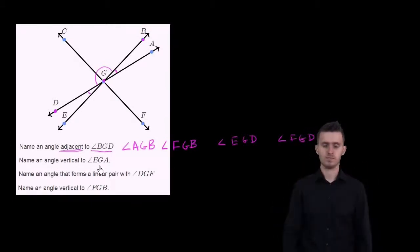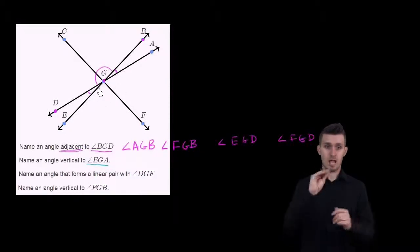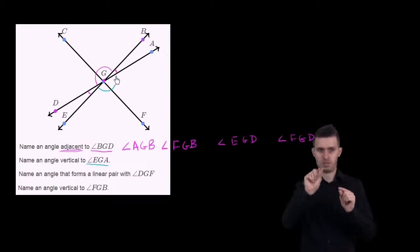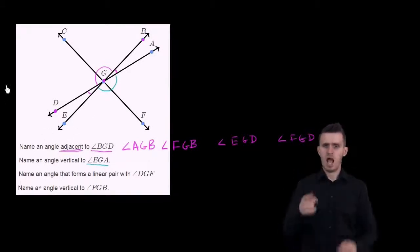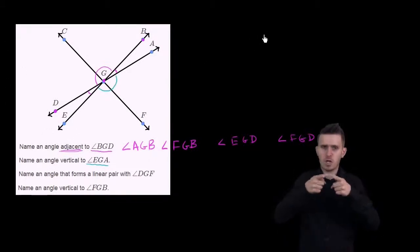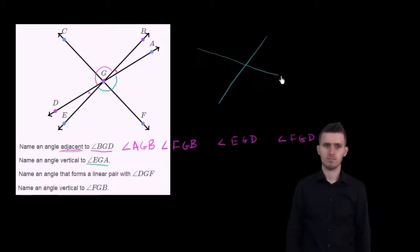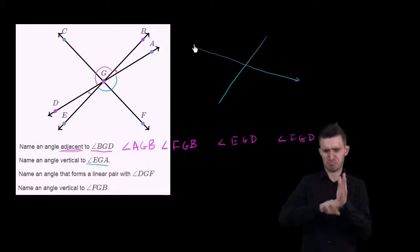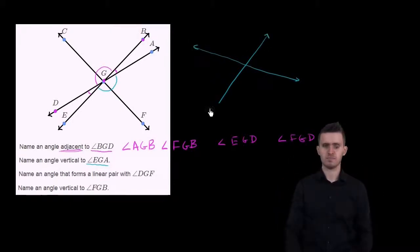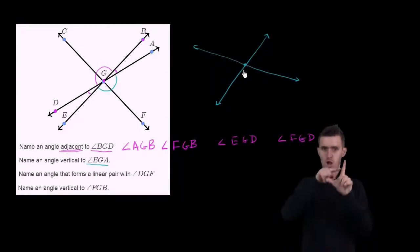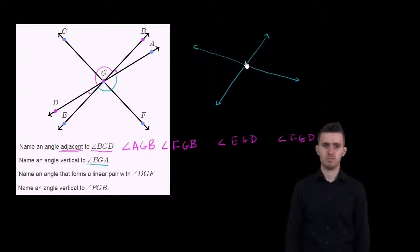Name an angle vertical to angle EGA. So this is angle EGA right over here. The way you think about vertical angles is imagine two lines crossing just like this. They could literally be lines intersecting at a point.